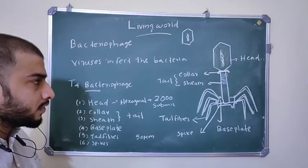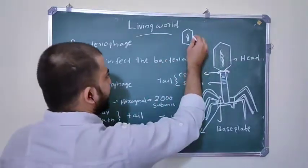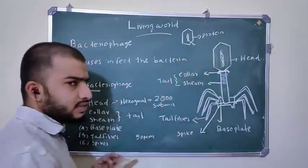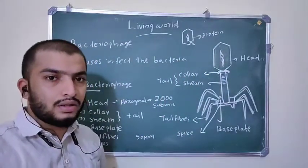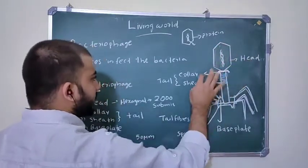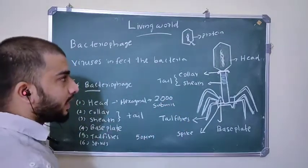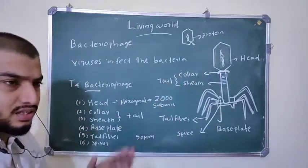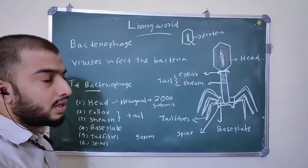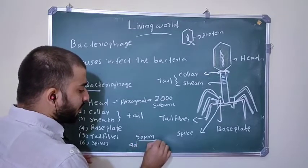The basic structure of a virus consists of a protein coat and genetic material. In the case of Bacteriophage, the head region is made up of around 2,000 subunits of protein and has a hexagonal shape. Inside the head region, double-stranded DNA is found, which is around 50 micrometers in length.